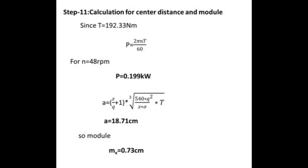Step 11: Calculation for center distance and module. Since torque is 192.33 Nm, power equals 2 pi NT divided by 60. For N equals 48 rpm, power equals 0.199 kW.